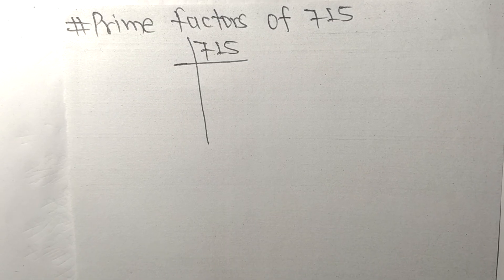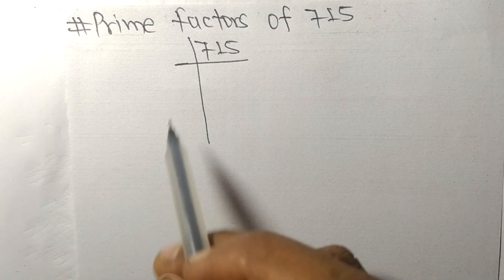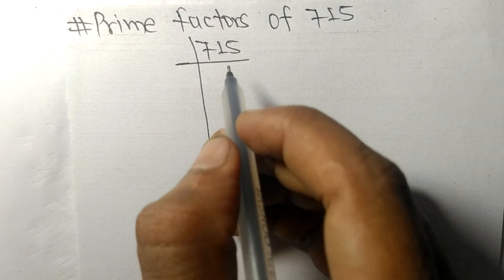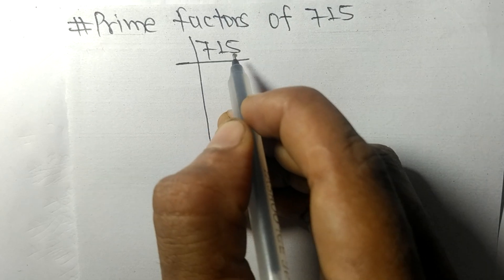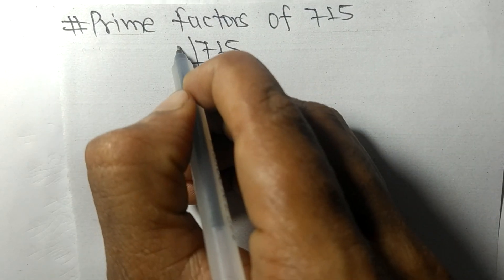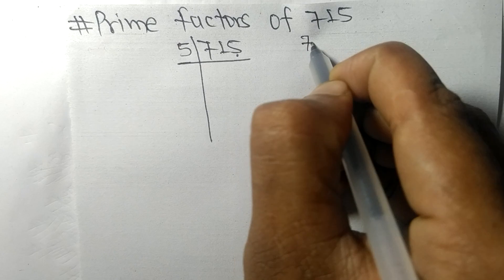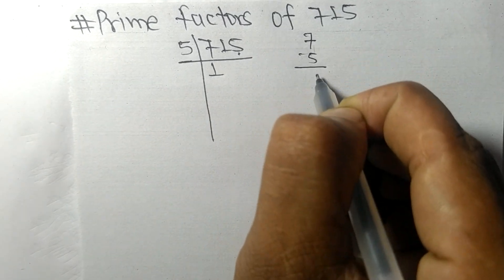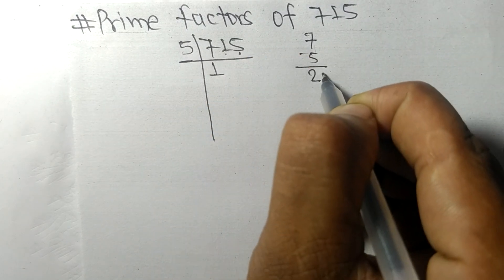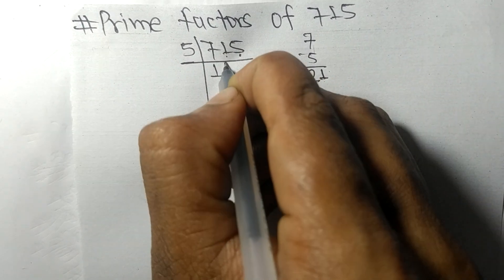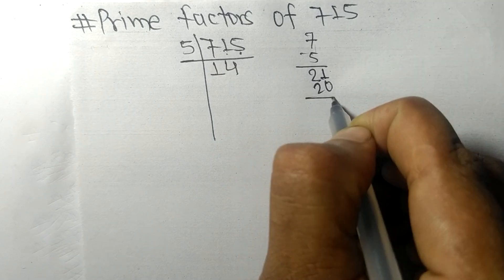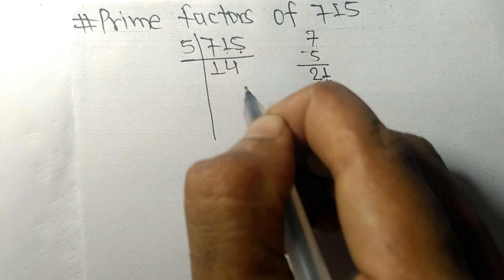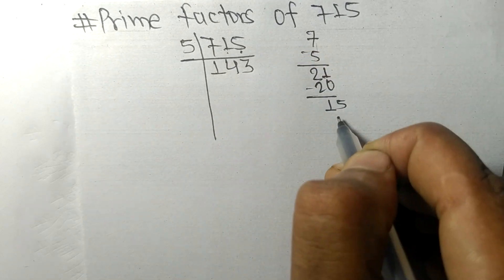Today in this video we shall learn to find the prime factors of 715. Since it contains 5 at the last digit, it is divisible by 5. Dividing: 5 times 1 is 5, remainder 2; 5 times 4 is 20, remainder 1; 5 times 3 is 15. So on dividing 715 by 5 we get 143.